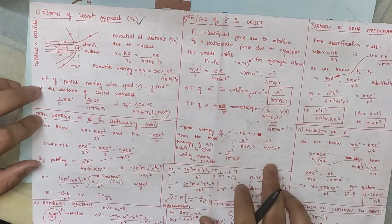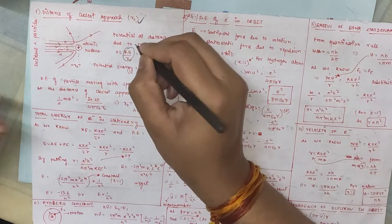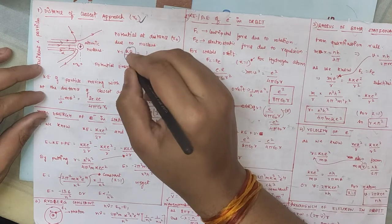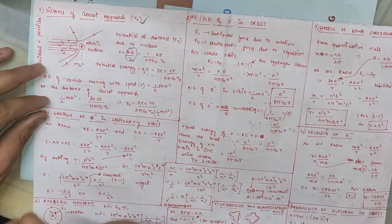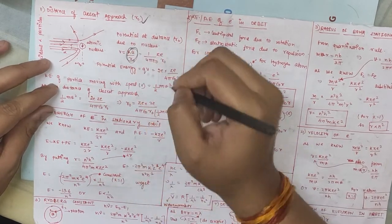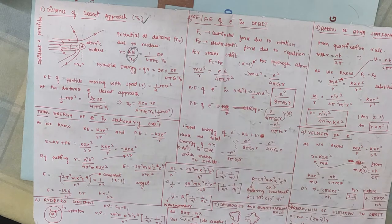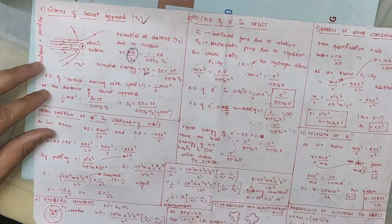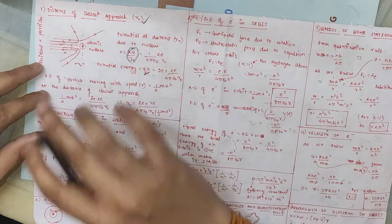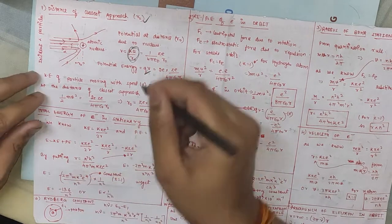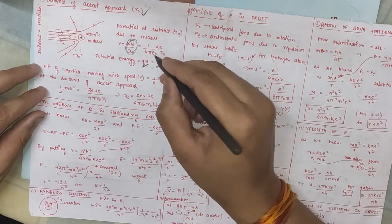Let's see what happens here. The potential is KQ/R. At the closest approach distance R₀, the potential is KQ/R₀, which equals 1/(4πε₀) × ZE/R₀. Then we have the potential energy, which is Q into V. Q here means 2e (the charge of the alpha/helium nucleus, atomic number 2). So potential energy is 2e × ZE/(4πε₀R₀).